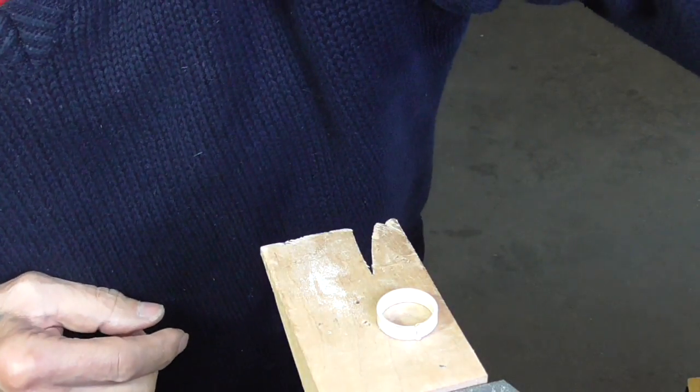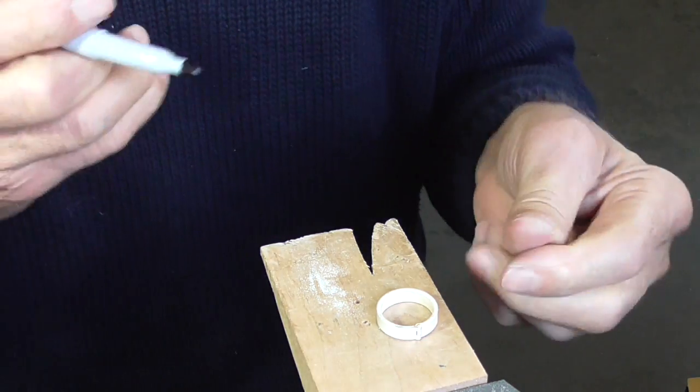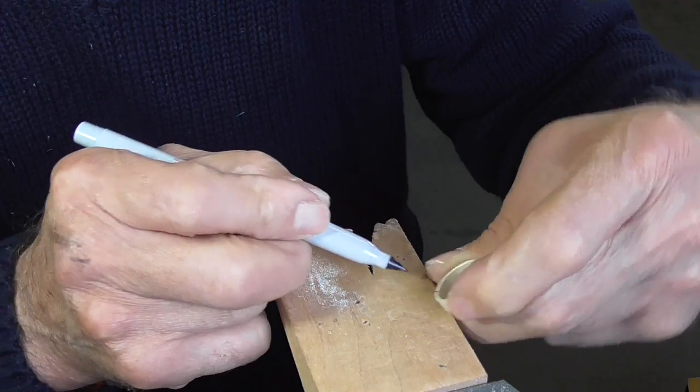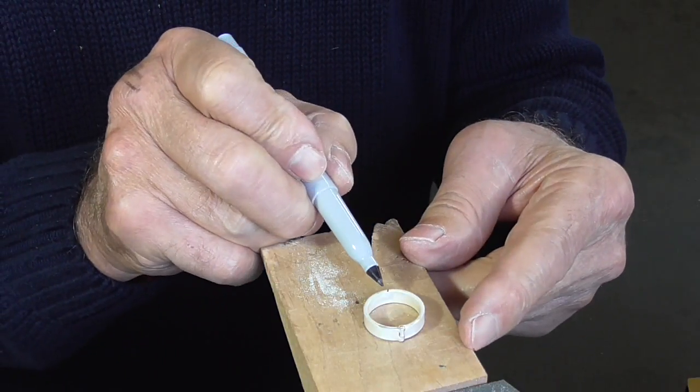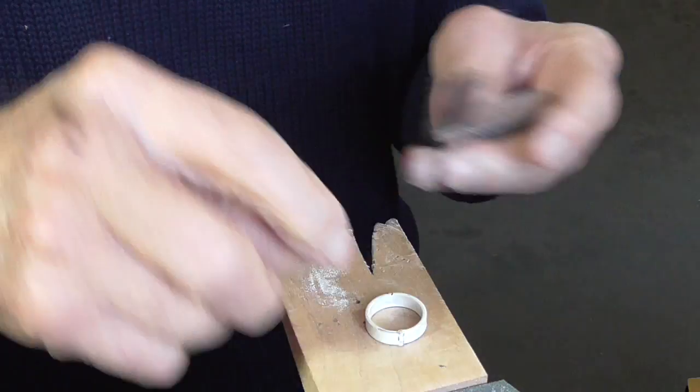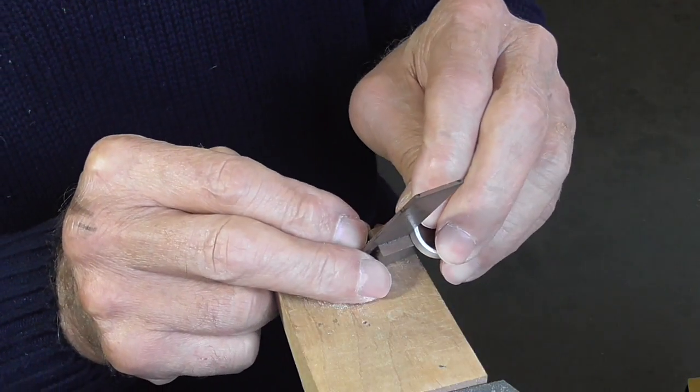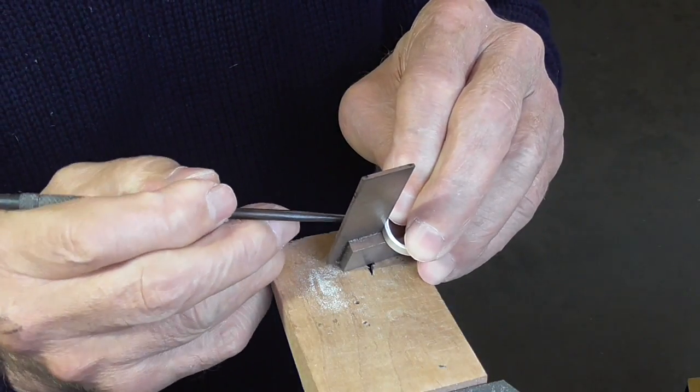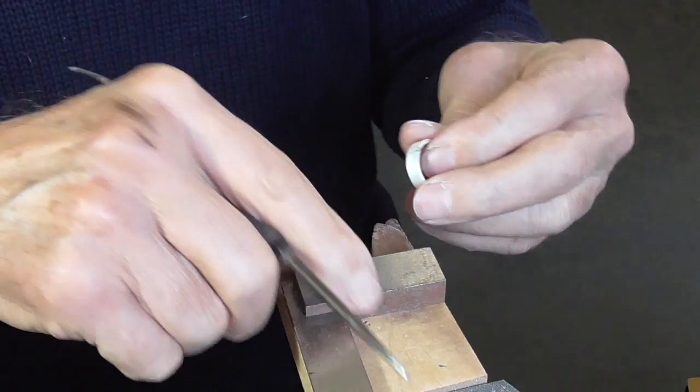Once your rivet is set, what we're going to do is mark the other side of the ring and saw through. Now you can just do this by eye if you want, because it doesn't have to be absolutely perfect, but close. Then take your tri-square, hold the ring on, mark with the scribe so you get a nice sharp mark. That's nice and square, and we're going to saw following that line.